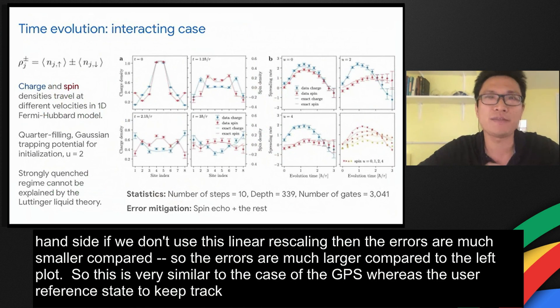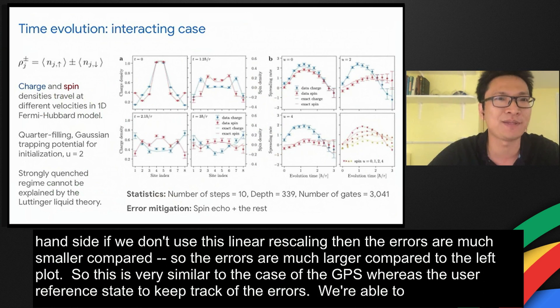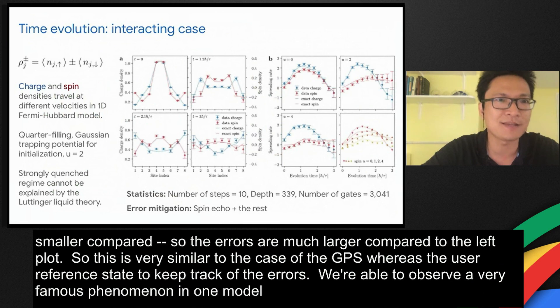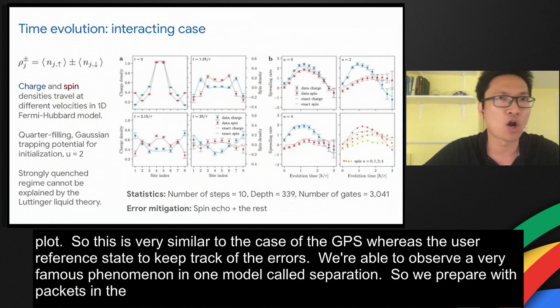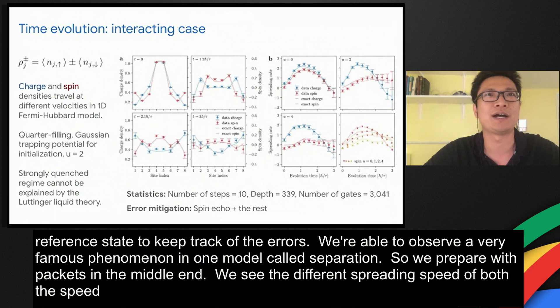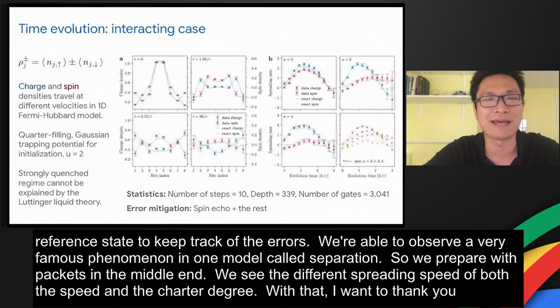With all these error mitigation schemes and the calibration scheme, we were able to observe a very famous phenomenon in one-dimensional Fermi-Hubbard model called spin-charge separation. We prepare wave packets in the middle, and we see the different spreading speed of both the spin and the charge degrees of freedom. With that, I want to thank your attention and hand it back to Marissa.